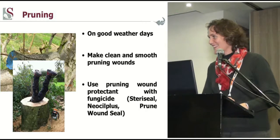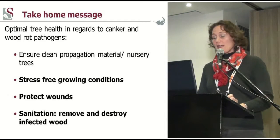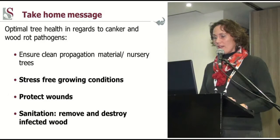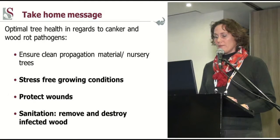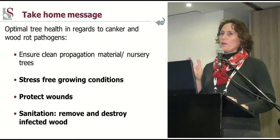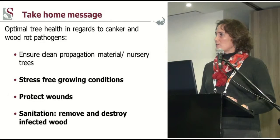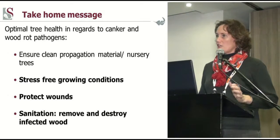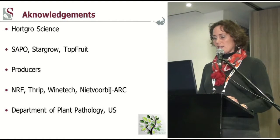My take-home message for optimal tree health regarding canker and wood rot pathogens is: firstly, ensure clean propagation material — though that is not in the hands of the producer. What you can do is ensure stress-free conditions for your young trees, protect pruning wounds, and sanitize especially older orchards, because newly planted orchards next to older orchards are in very close proximity, and these spores are carried by wind and can disperse further than just between two rows. Thank you, and I would like to acknowledge all the funding bodies and people who aided with the research on canker and wood rot.